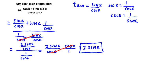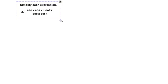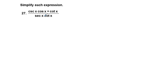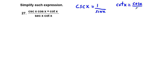The next problem is 27. We have cosecant x cosine x plus cotangent x over secant x cotangent x. We're going to do the same thing — put all this expression in terms of sine and cosine. Cosecant x equals 1 over sine x, cotangent x equals cosine x over sine x, and secant x equals 1 over cosine x — the same suspects as in problem 25.